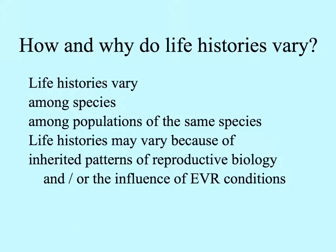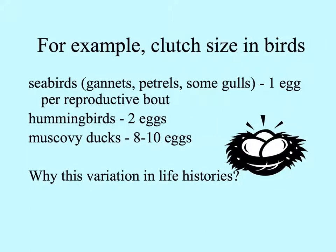So why do life histories vary? They can vary among species and among populations of the same species. They likely vary because of inherited patterns of reproductive biology and also the influence of the environment. For example, let's look at the number of offspring in a reproductive bout for birds, known as clutch size.